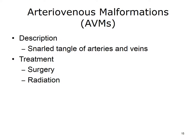Arteriovenous malformations, or AVMs, are defects in your circulatory system. The circulatory system includes the arteries, veins, and capillaries that carry blood to and from the heart. An AVM is a snarled tangle of arteries and veins that interferes with blood circulation in an organ. The cause of AVMs is unknown, though they develop during pregnancy or soon after birth. The greatest danger is hemorrhage. Treatment is in the form of prevention and can include surgery or focused radiation therapy.